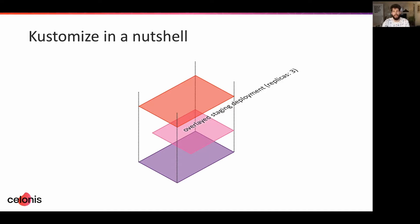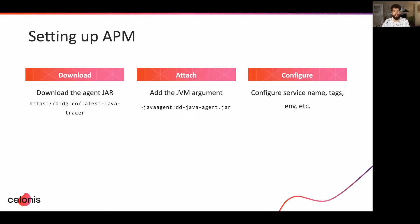Now let's get back to APM. If you've already configured APM for a Java service, you know this is not incredibly hard, but also maybe not as easy as you might wish. After ensuring your Datadog agent can collect traces, there are three things to do: you need to download the Java trace agent, attach the agent at startup of your application, and configure a bunch of things such as the Datadog agent's IP, your service's name, tags, and other customizable options.